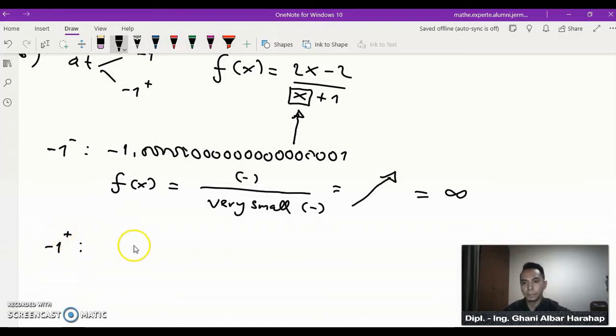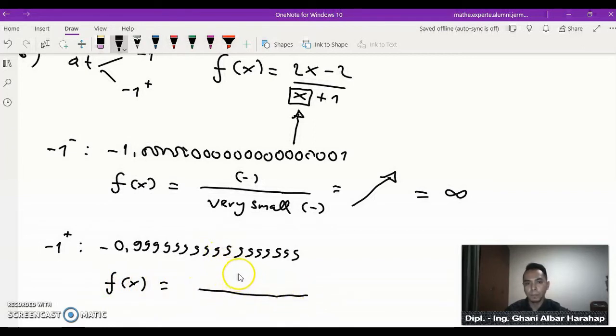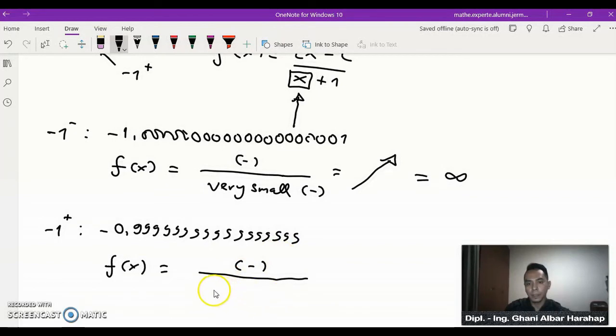And now right to your minus 1, if we put for example minus 0.9999999, for example like this, what happens to your function? Still you have up here a negative expression, and here also you will have a very small number and it's positive. So your graph will fall towards minus infinity.